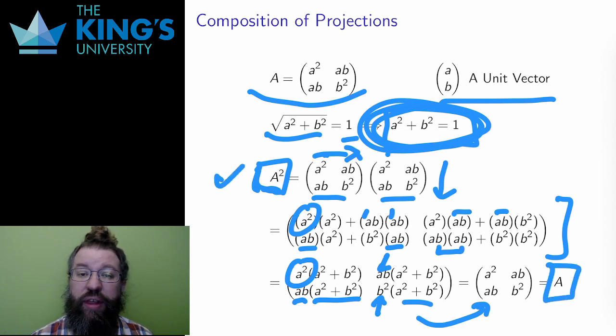Therefore, I've started with A composed with A, and calculated to show that I just get A back. Any projection composed with itself, any projection done twice, is the same as the projection done just once.